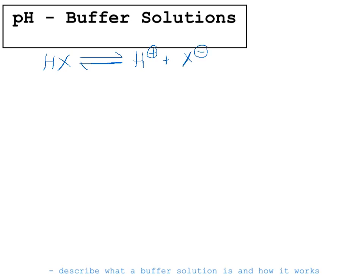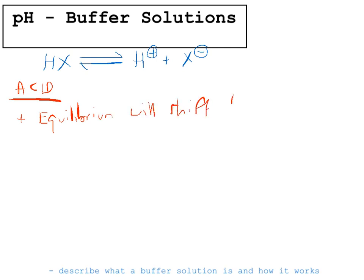What we've got to think about is what happens when we add a little bit of acid or a little bit of alkali. If we're adding acid to this solution, then essentially we're adding H⁺. If we increase the concentration of H⁺, the equilibrium will shift to the left to oppose the increase in concentration of H⁺. If this happens, then the ratio HX over X⁻ will stay constant.